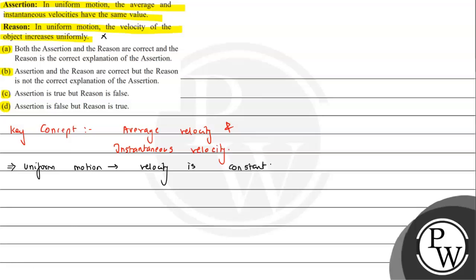Now let's check the assertion. In uniform motion, the average velocity equals the instantaneous velocity. If we talk about instantaneous velocity, it will just be the displacement upon the time at any given instant, and we can find the value of instantaneous velocity.